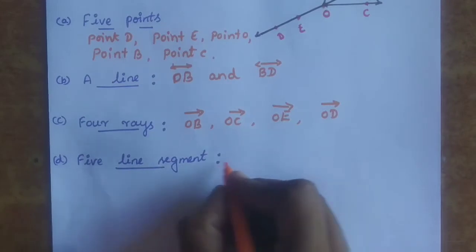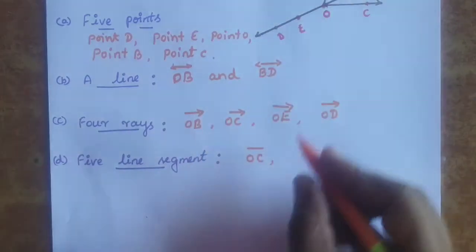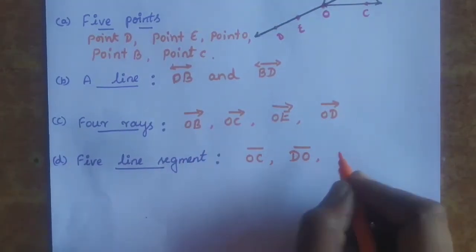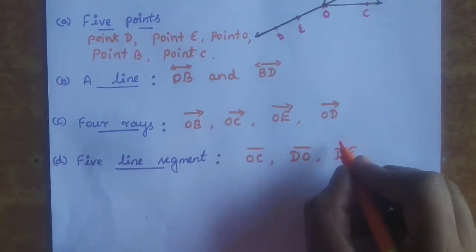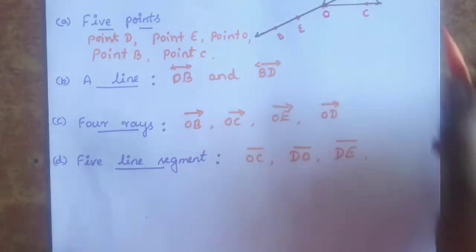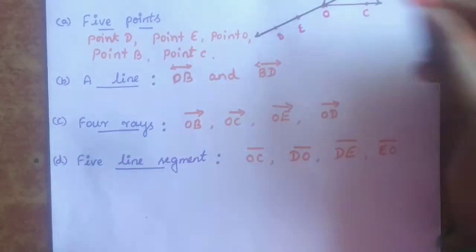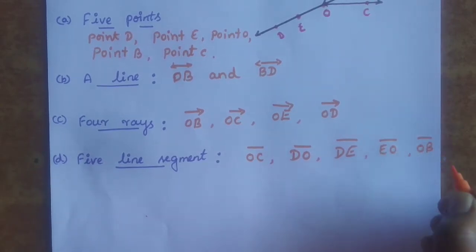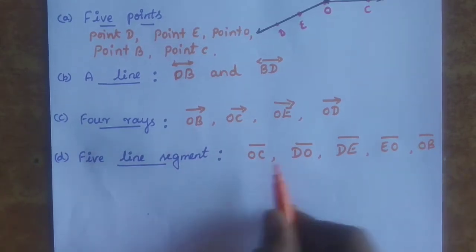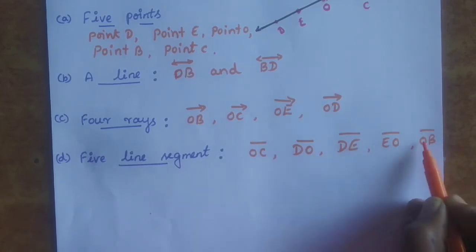EO is one line segment, and DB is also one line segment. So the five line segments are: OC, DO, DE, EO, and OB.